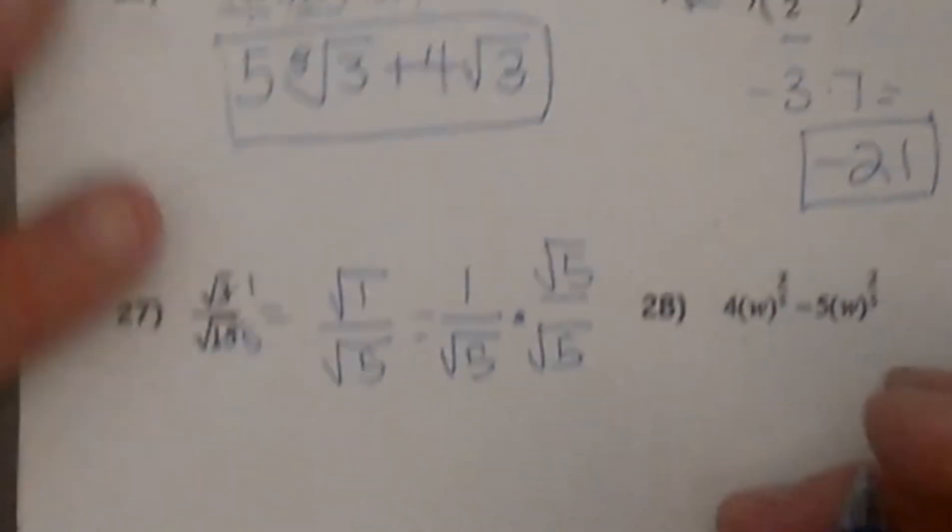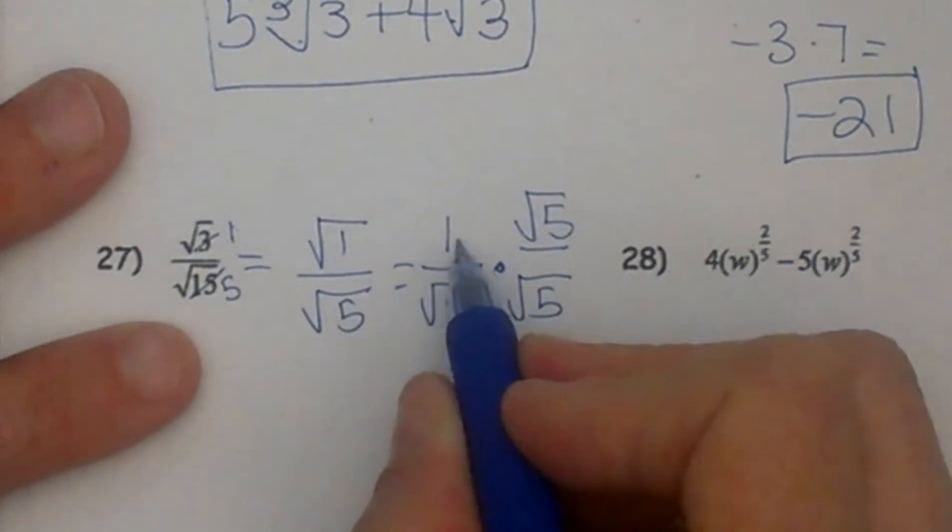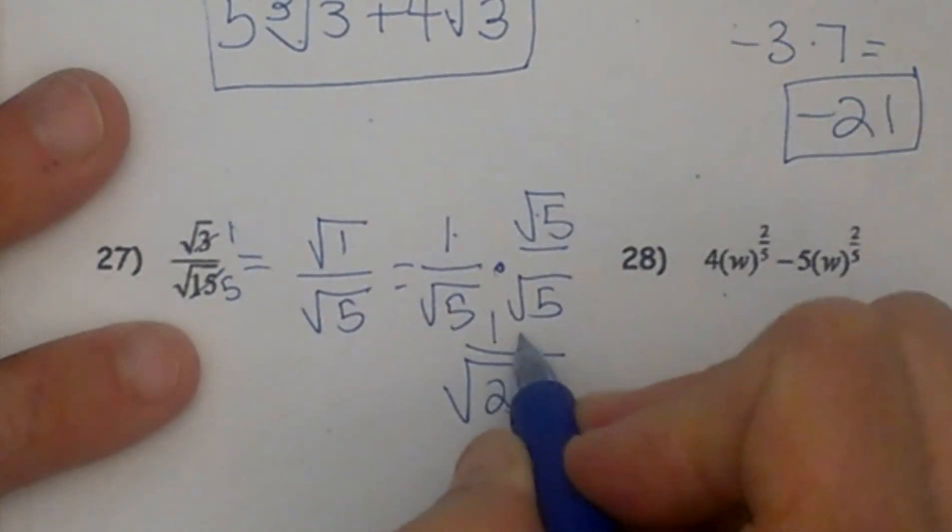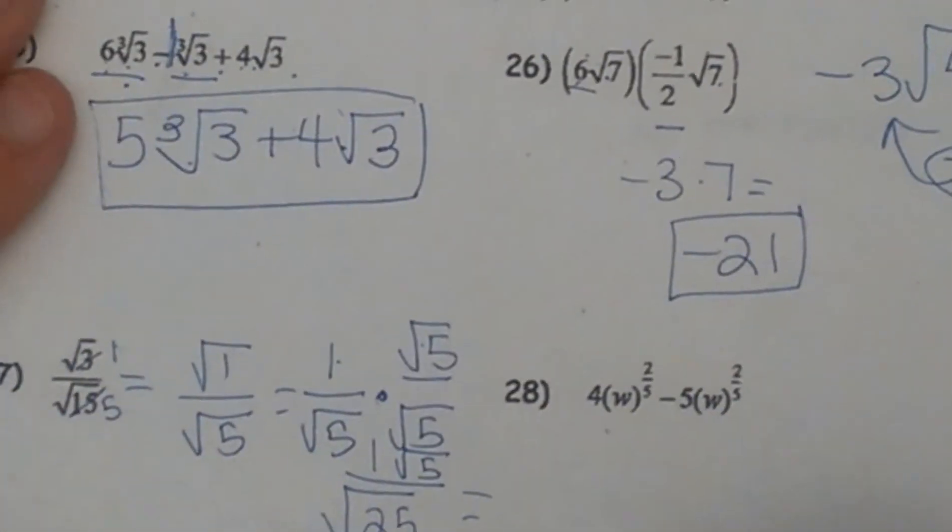So root 5 times root 5 is root 25, and then on top I have 1 times root 5, so 1 times the square root of 25. So let's simplify that now.